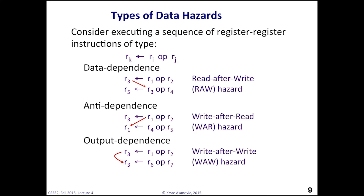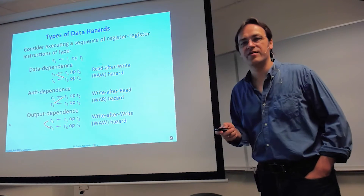For register-register instructions, a read-after-write hazard means the first instruction writes a value into a register that the second instruction reads — for example, R3 is written then read. An anti-dependence (write-after-read) means the first instruction reads R1, and you must ensure that register isn't overwritten before the read completes. An output dependence (write-after-write) means two instructions write the same register with different values, and you must ensure the later value is the one held in the register after execution.